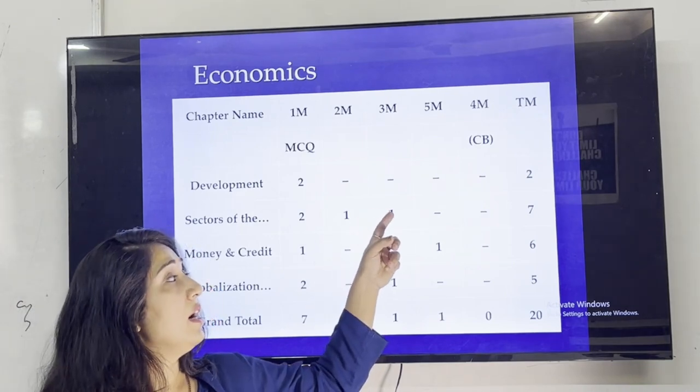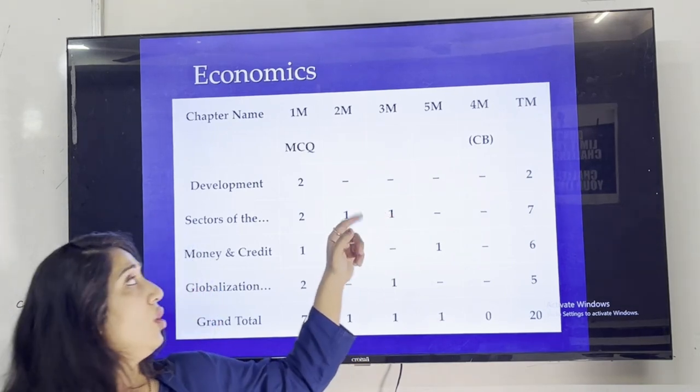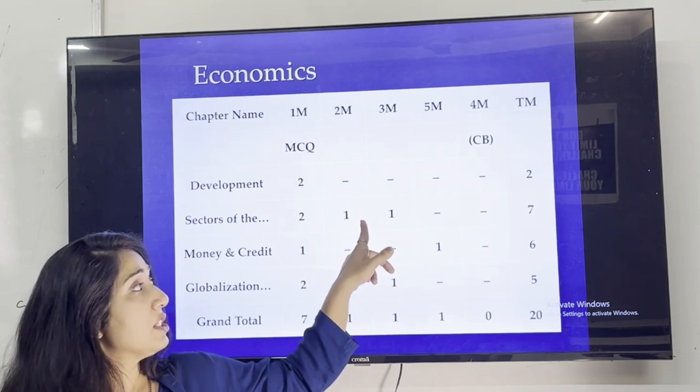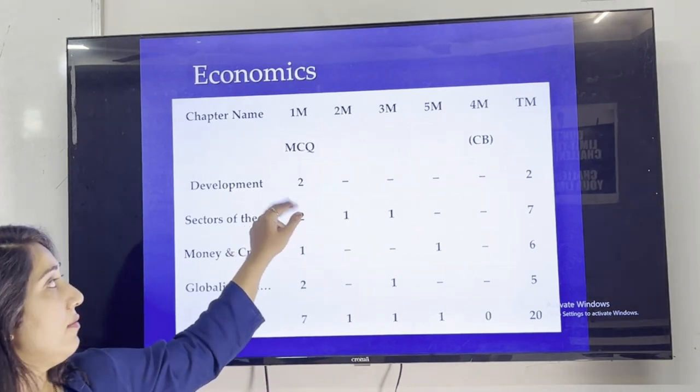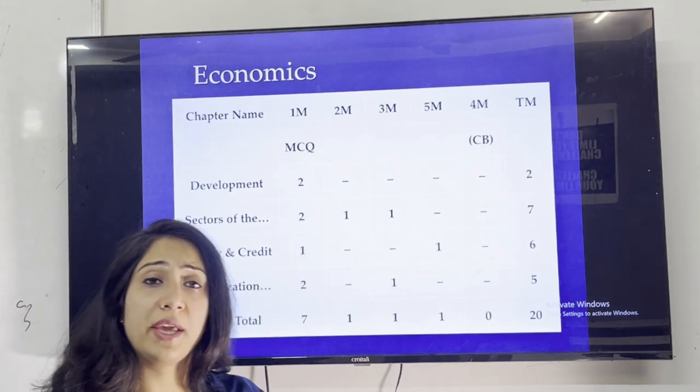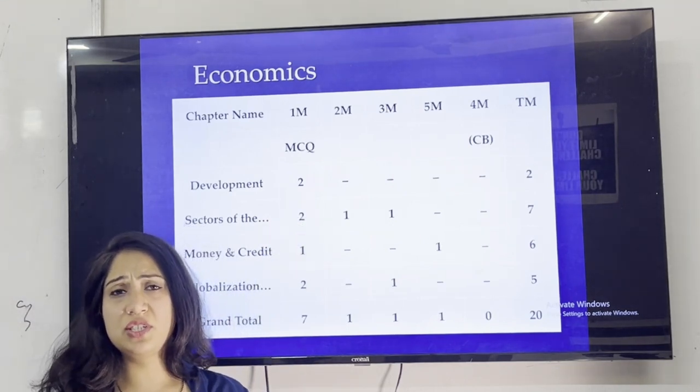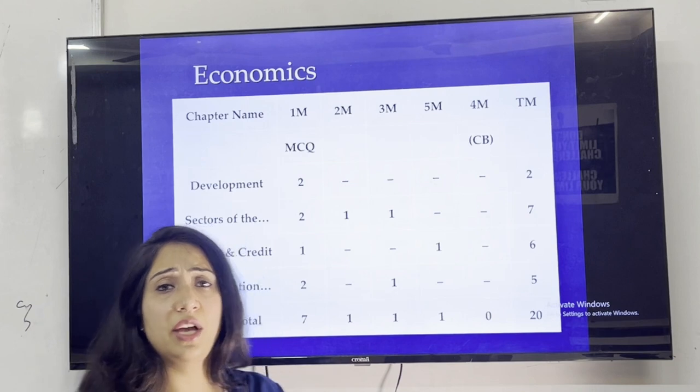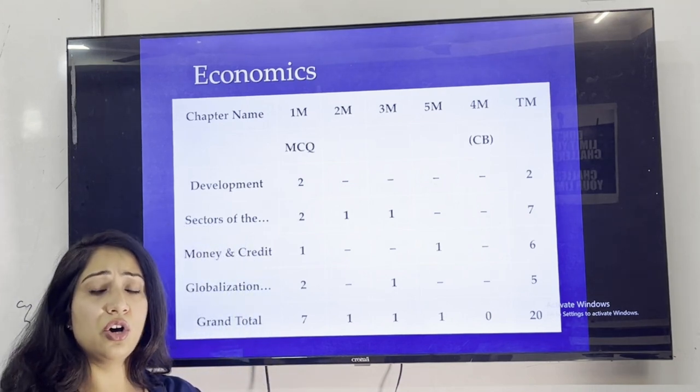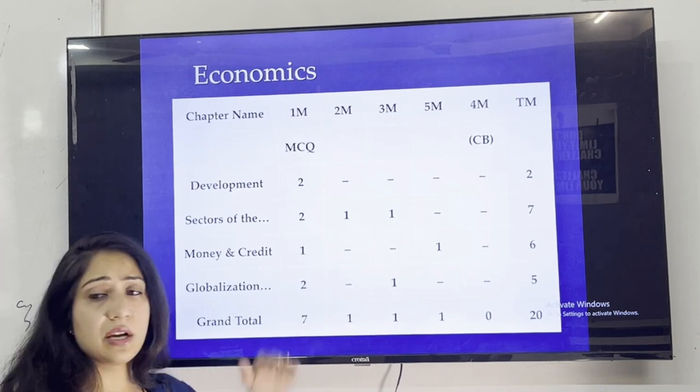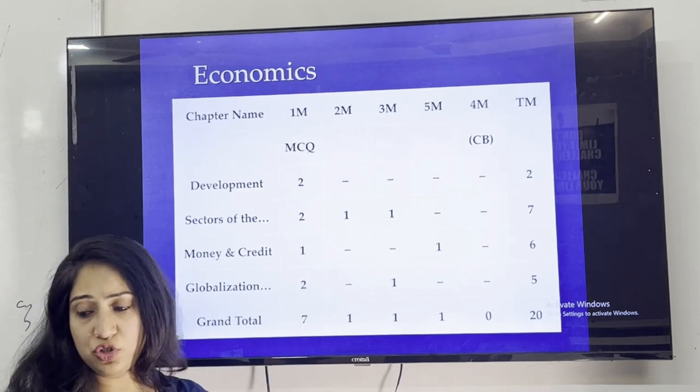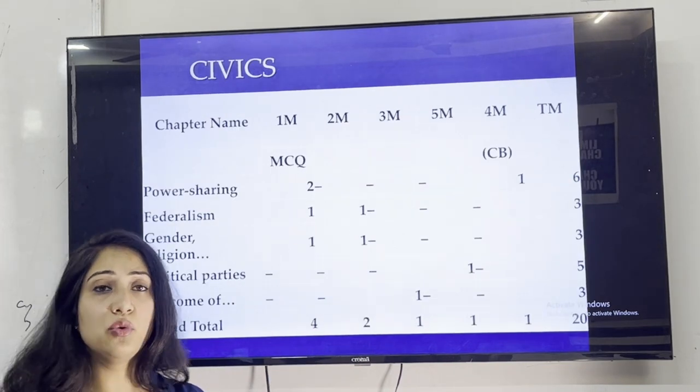Last we will take Unit 1 Development, because this is theory heavy. Small questions like Human Development Index and what they need to know. After economics, we will take civics.